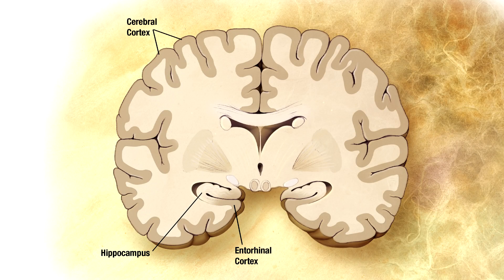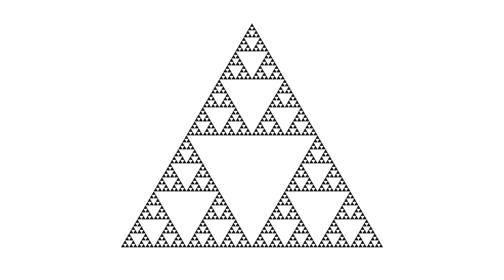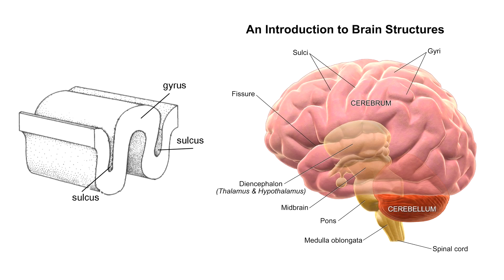The outermost parts of the lobes is referred to as cortex, which is folded many times, thus more cortical area can fit inside the skull. This folding creates grooves, referred to as sulcus, or in plural sulci, and ridges, called gyrus, or in plural gyri.